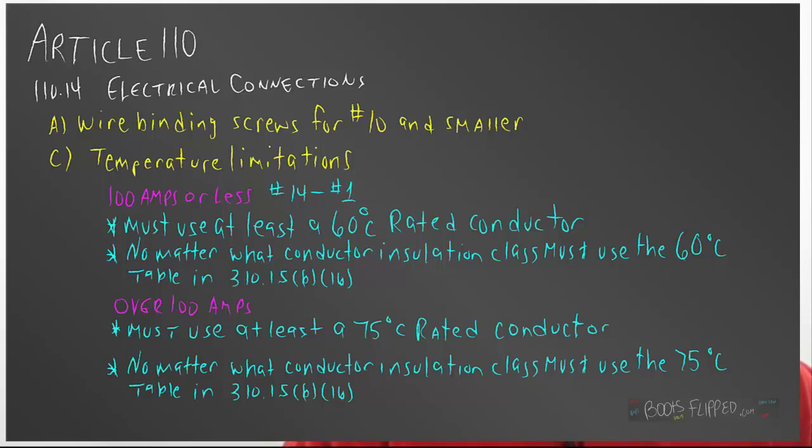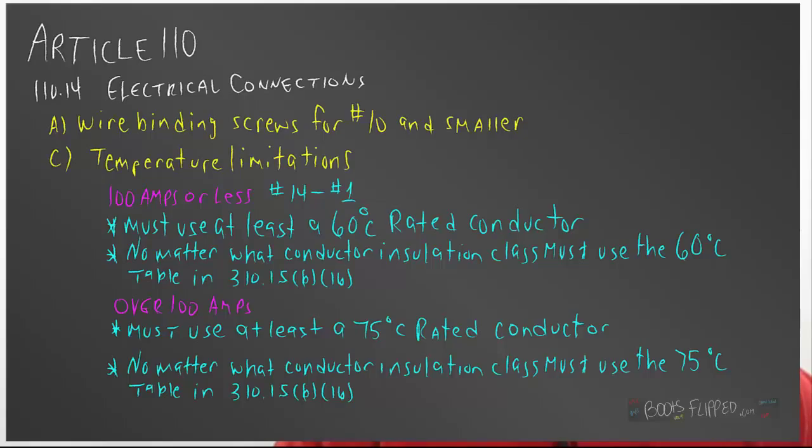Now, once we get over 100 amps, we can use the 75-degree table. Well, that at least gives us one more table over, as long as the insulation class we're using is 75 degrees or above. And let me point out that in both of those applications, if you're at 100 amps or less, you have to use wire that's rated for 60 degrees or more. And in a 100 amp or over 100 amp application, you have to use wire that's rated 75 degrees or more.